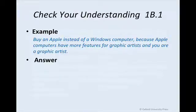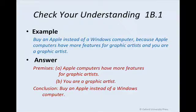Take a look at a given argument and the first thing you might consider doing is looking for indicator words and phrases. For example: 'Buy an Apple instead of a Windows computer, because Apple computers have more features for graphic artists and you are a graphic artist.' The word 'because' acts as a premise indicator word. Notice the way the argument is laid out — premises are stacked on top of one another and the conclusion is on the bottom. When identifying premises and conclusion, consider rewriting the argument in standard form: premise one, premise two, etc., then the conclusion at the bottom. That format will help you see the structure of the argument.